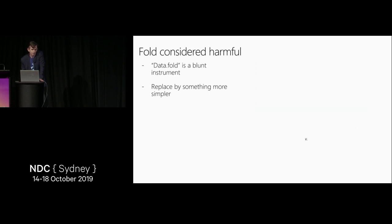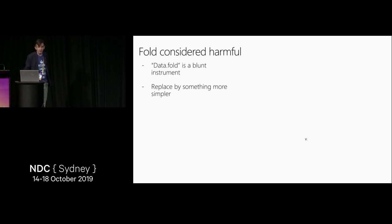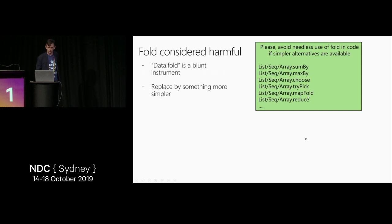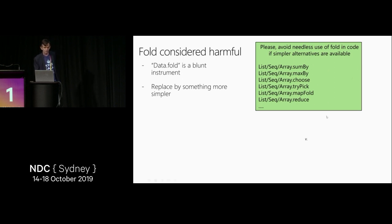You'll also see a lot of use of fold in some functional programming languages. F-sharp actually de-emphasizes fold a lot. Instead, you do the actual `sumBy`, `maxBy`, `choose`, `tryPick`, `mapFold`, or `reduce` — some more specific operation. Fold is like a blunt instrument, like a goto in your code. It's often extremely hard to understand what a fold is actually doing. Use these more specific operators.